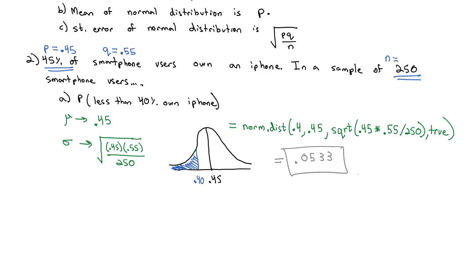So the probability that we do a sample of 250 people and get fewer than 40% of them owning an iPhone is only 0.0533.